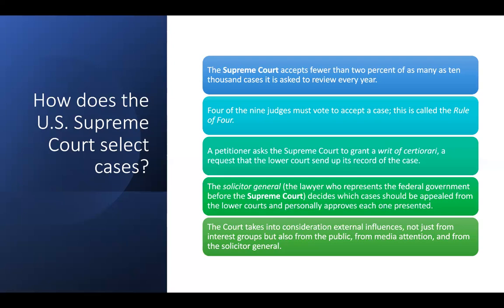Remember when the Dobbs decision leaked and the world knew which direction the court was going to go on abortion? There was an enormous amount of public pressure on the justices, even at their homes, to try and get them to change their decision. But they can't just bow to the public — they have to look at the Constitution. So they do take into consideration a lot of things.